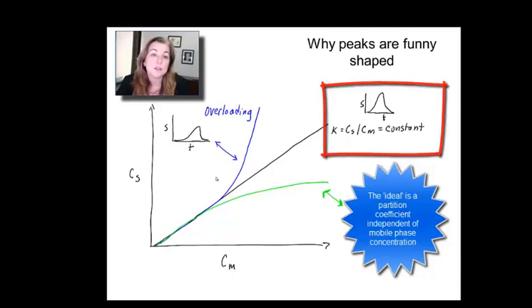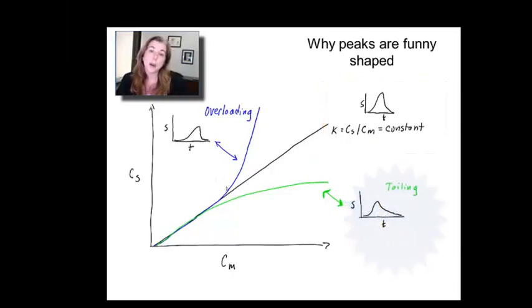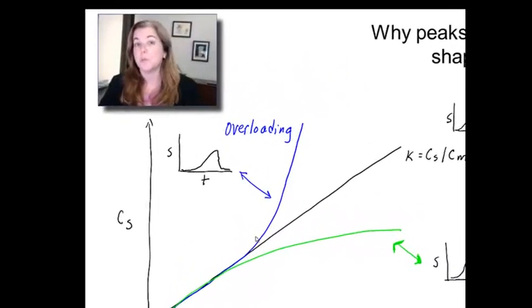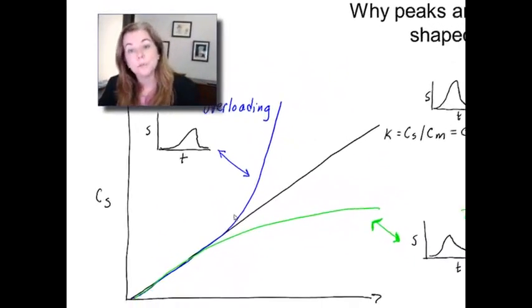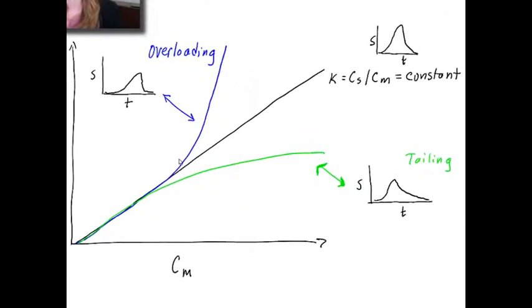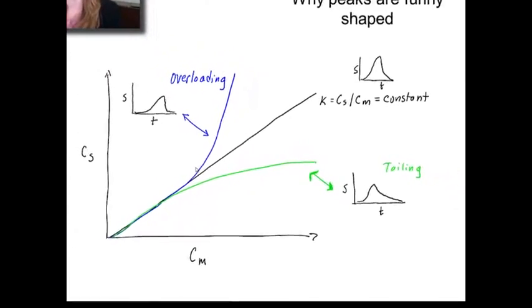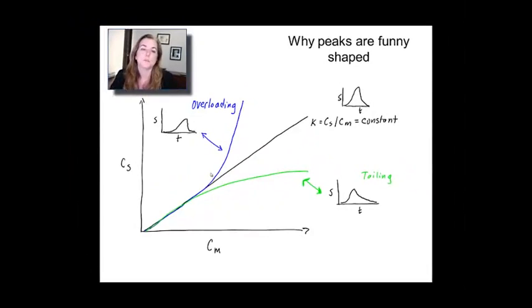But that's not the case. So, one possibility is you can get overloading, in which you actually get a higher concentration in the stationary phase than one would expect. Or, conversely, you can get tailing, where you have a lower concentration in the stationary phase than you would expect. Both of those lead to funny shapes.